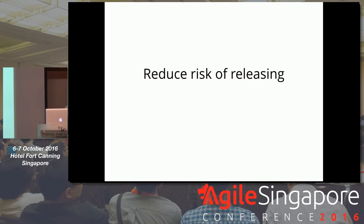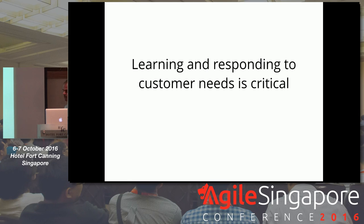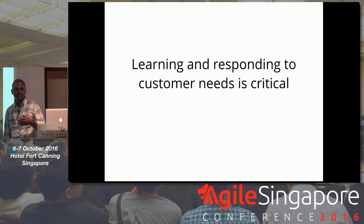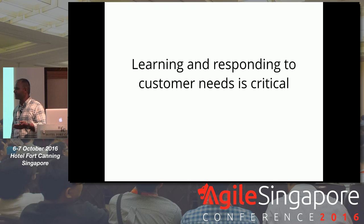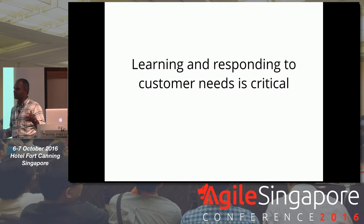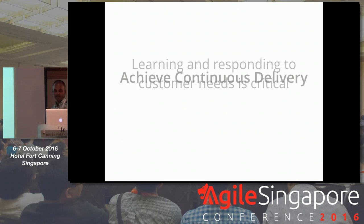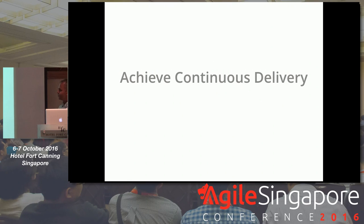When you release frequently, you reduce risk. There's also learning and responding to customer needs — business is changing so fast nowadays. If you don't have something in the market to counteract what competitors are putting out, maybe you're at a big loss. If you have a six-month cycle and your competitors have something in the market, you're basically giving them six months to get more customers, and then you're behind. If you're releasing frequently, you can catch up faster.